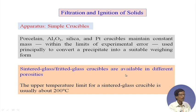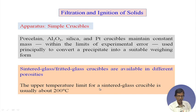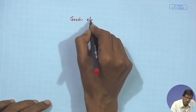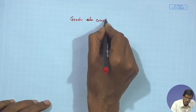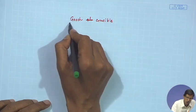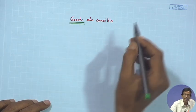For nickel DMG filtration we do not use filter paper — this sintered glass crucible can withstand a good temperature up to 200°C. This glass crucible, also known as the sintered glass crucible or Gooch crucible, is named after the scientist Gooch.